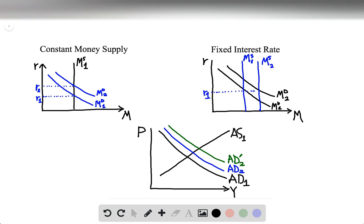Now, in contrast, if the Fed maintains a fixed interest rate, then they will have to necessarily increase the money supply. Money supply increases from M1S to M2S on the graph on the right. And what is the effect of that?